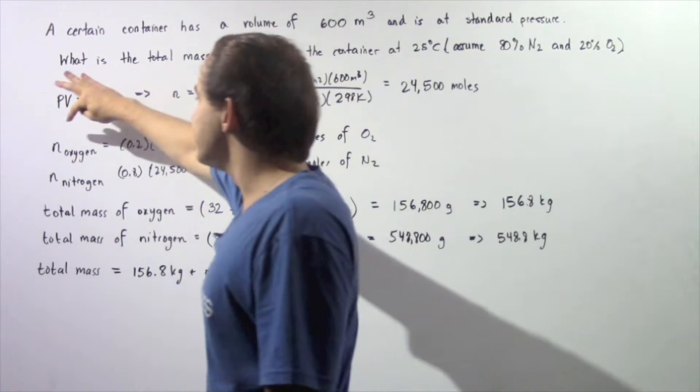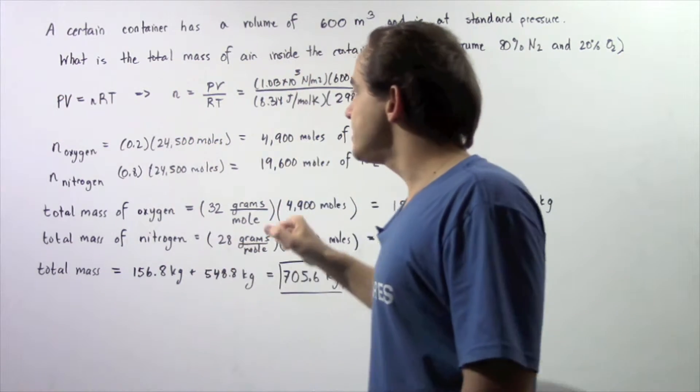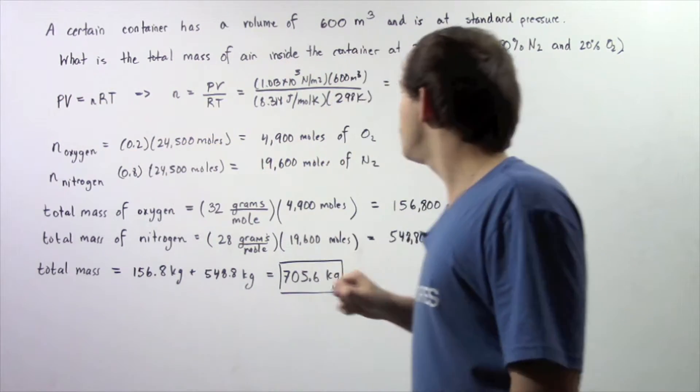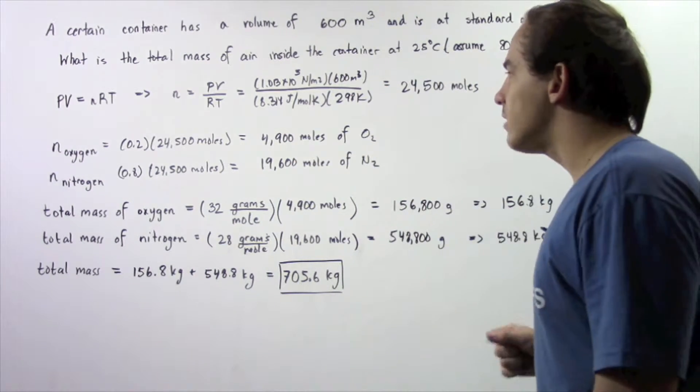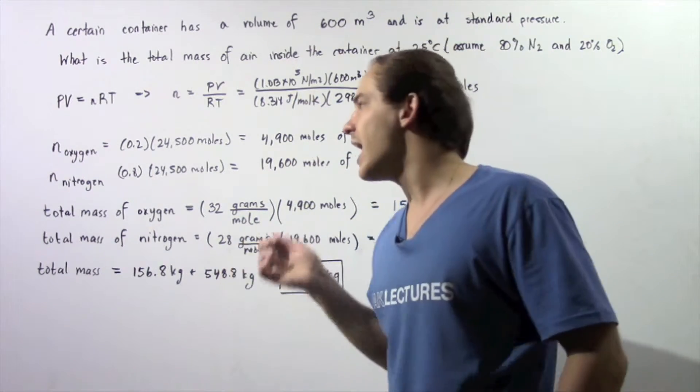And 20% of this value is equal to the number of moles of oxygen. So to calculate the number of moles of oxygen, we simply multiply 0.2 times this value and we get 4,900 moles of oxygen.